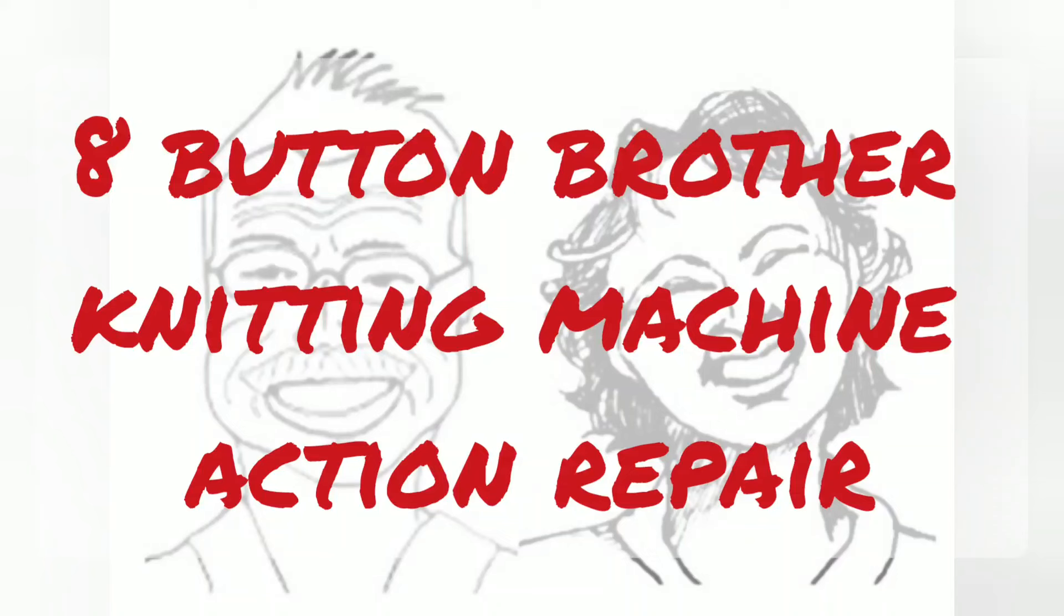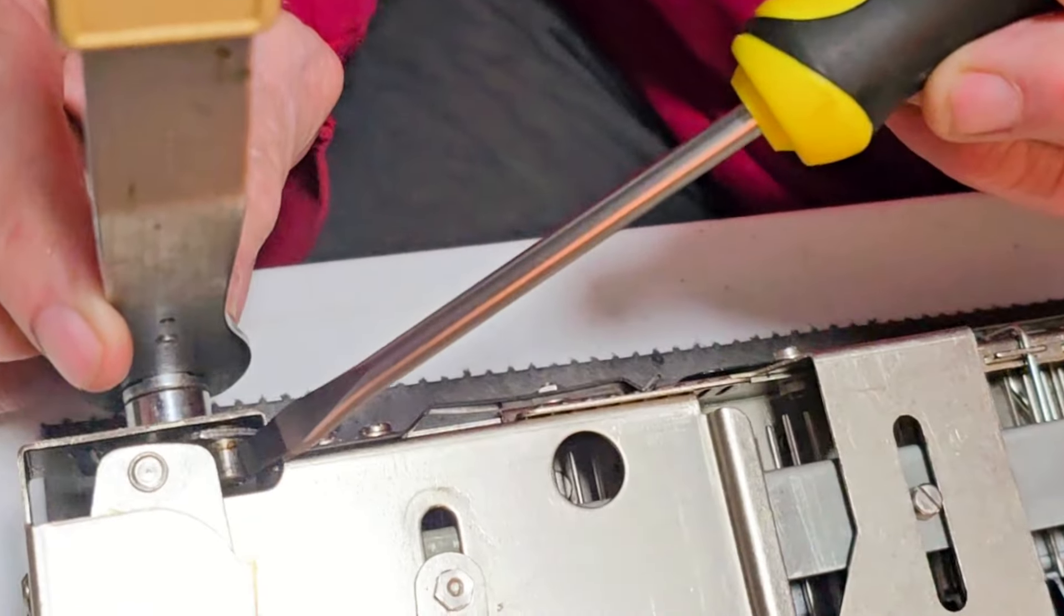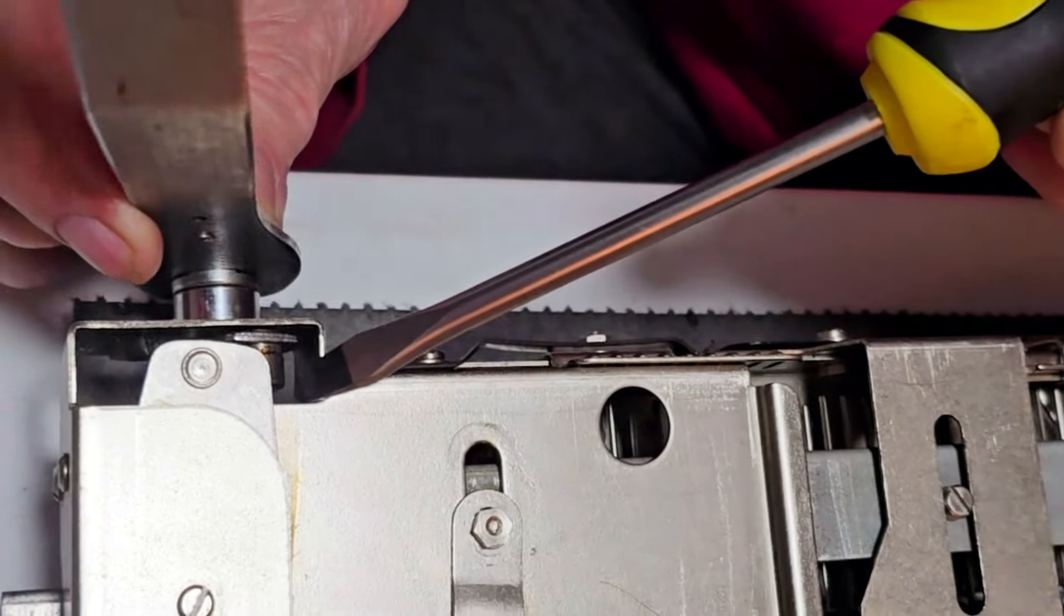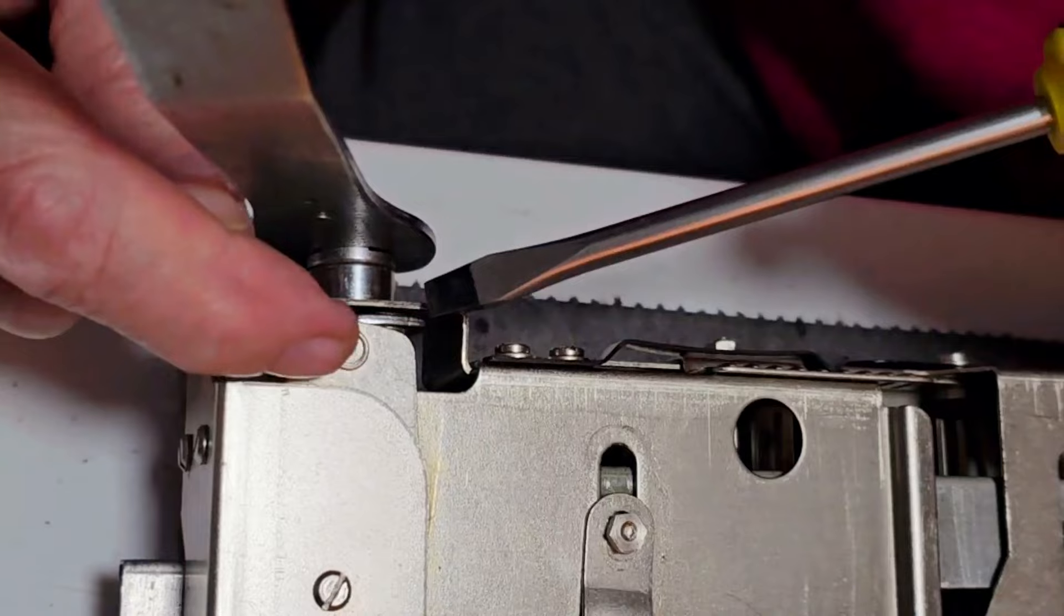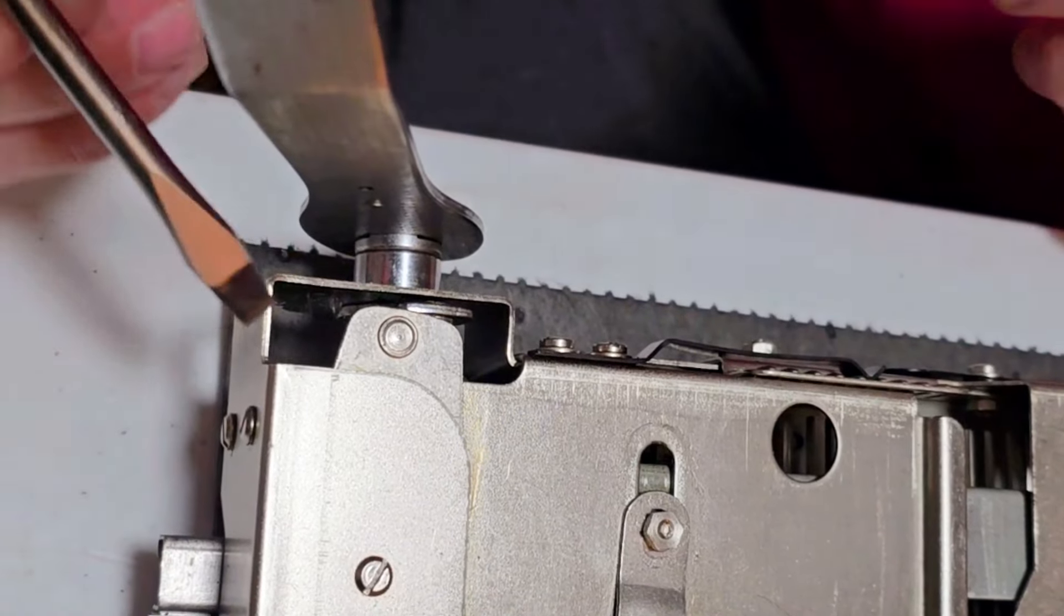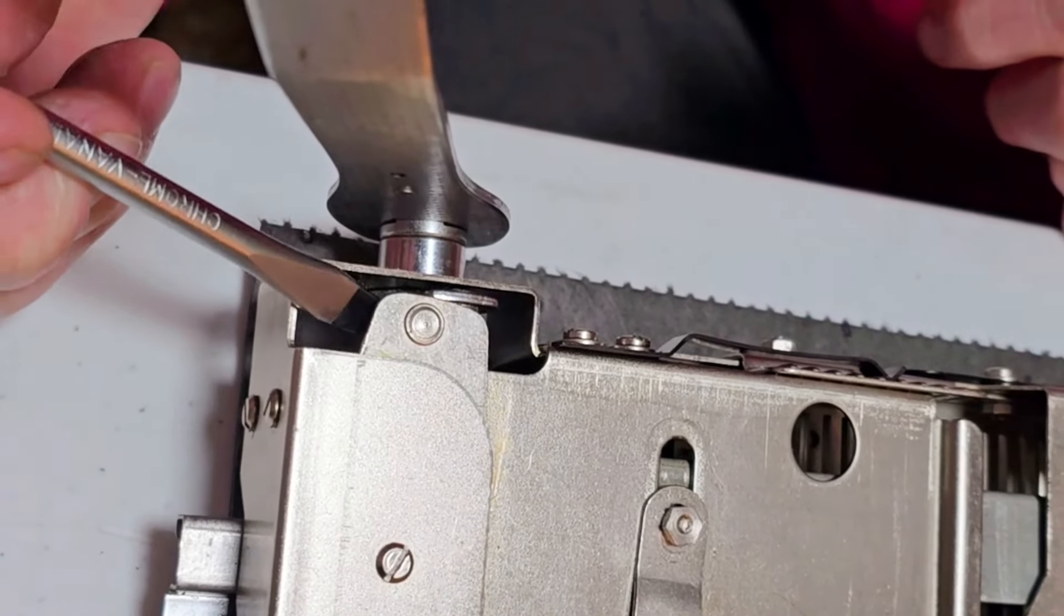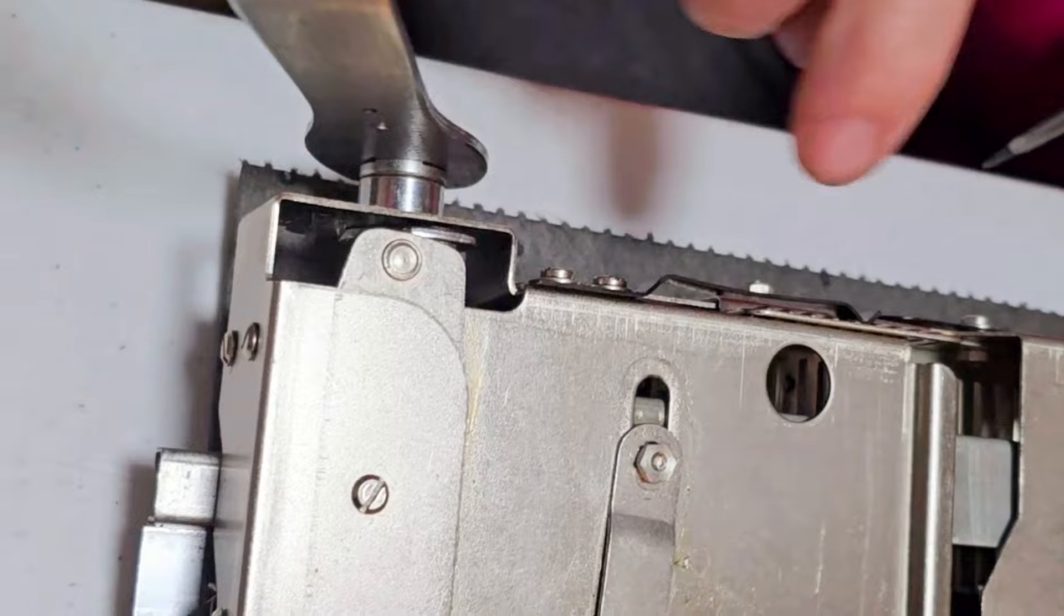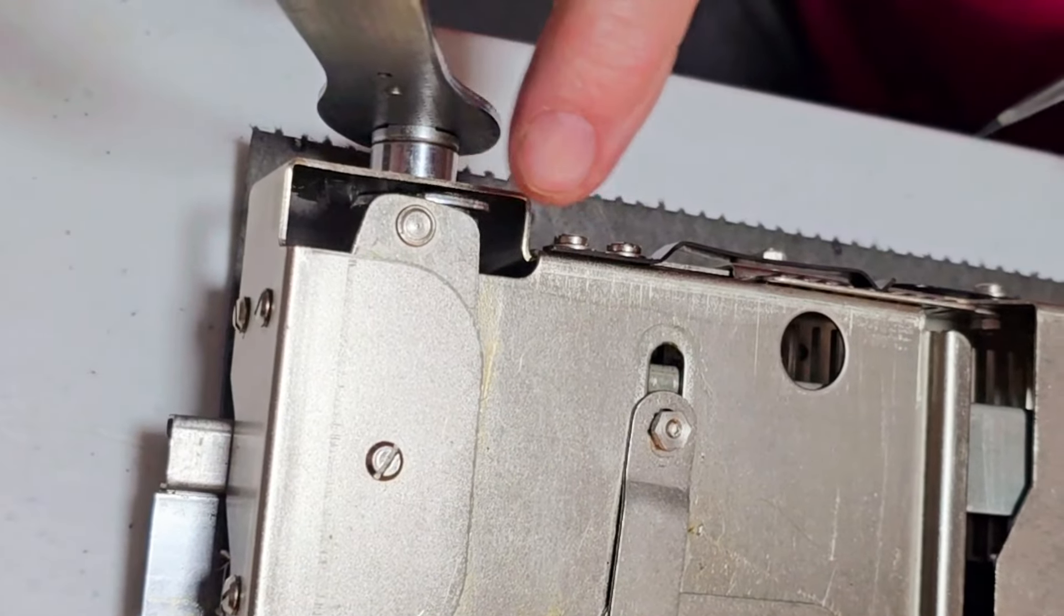Today we're assisting a friend who's having difficulty with the selection mechanism on her brother's 710. This is a push button machine. I have a push button machine that's a different model and we'll use it for the demo. They are all more alike than different. She's going to explain on her video the problem in her own words and we are using her video with permission.